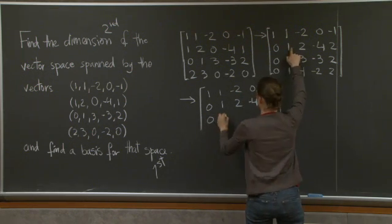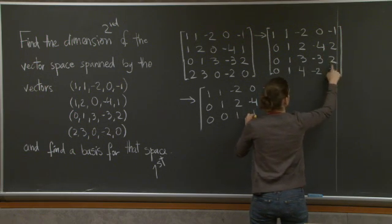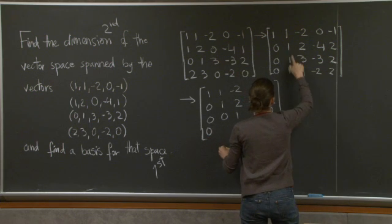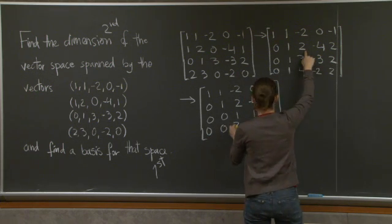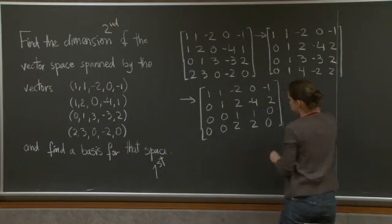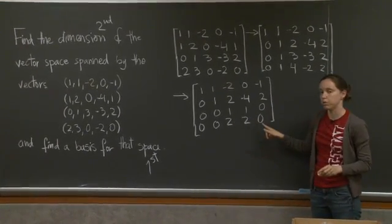0, 1 minus 1 is 0. 3 minus 2 is 1. Minus 3 plus 4 is 1. 2 minus 2 is 0. 1 minus 1 is 0. 1, 1, 0, 2, 2 again, and 0. Oh, you can see where this is going. In the next step, this row is going to disappear.